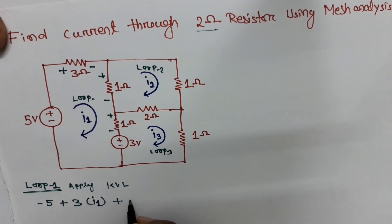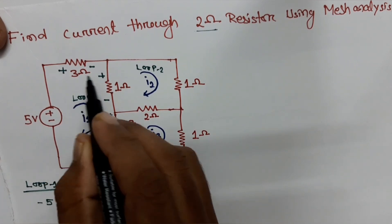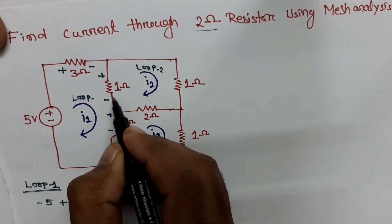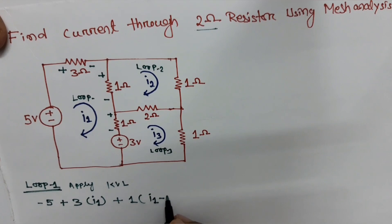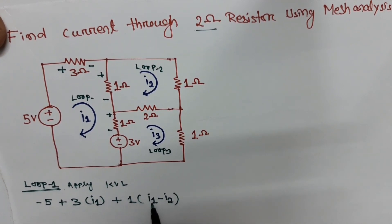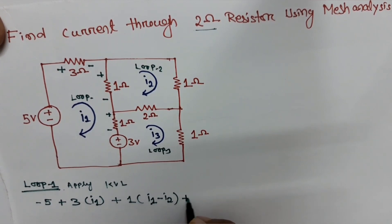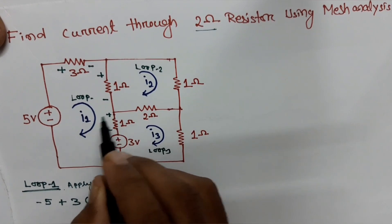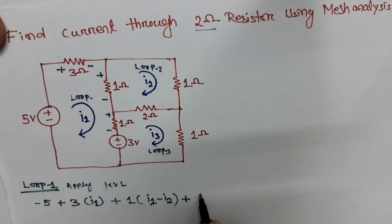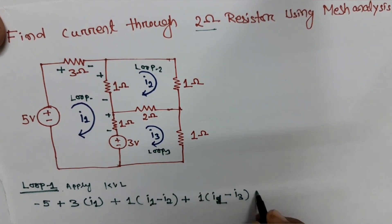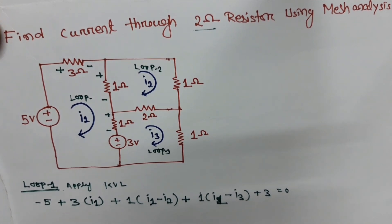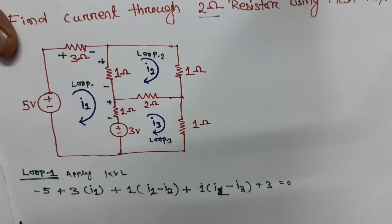In the 1 ohm resistor, two currents are flowing: i1 and i2. Since we are considering loop 1, i1 is higher and i2 is lower, so we write plus 1 times (i1 minus i2). In the next branch, i1 and i3 are both flowing, so we write plus 1 times (i1 minus i3). Then the voltage source plus 3, equal to zero.